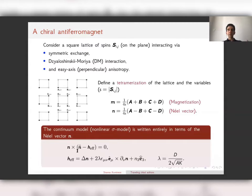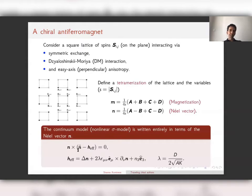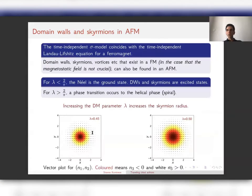In the dynamical term, the time-dependent part has a second derivative in time. This is quite different from the ferromagnet and the Landau-Lifshitz equation. However, if we look into the time-independent sector of the sigma model, it is identical to a Landau-Lifshitz equation.